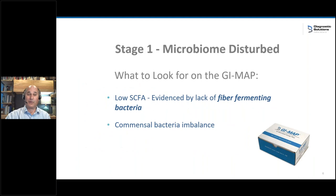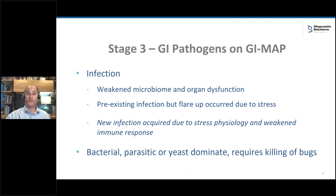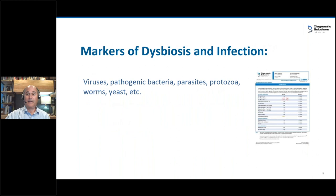The GI map has sections that analyze for the microbiome, an organ section called digestive health, and sections that look for GI pathogens — quite extensive sections. The markers of dysbiosis and infection are pretty clear. They look for bacteria, parasites, worms, yeast, and all other kinds of bugs.